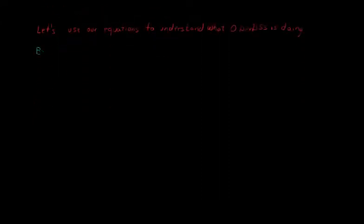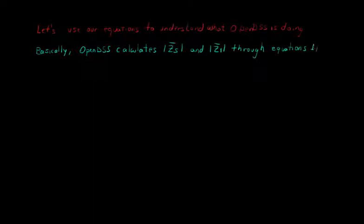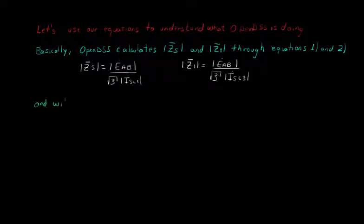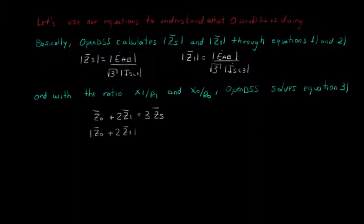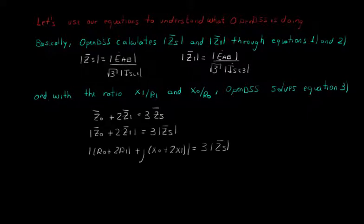Basically, what OpenDSS does is to calculate the module of ZS and the module of Z1 through equations 1 and 2, from which we can get that the module of ZS is equal to the module of EAB over square root of 3 times the module of ISC1, and the module of Z1 is equal to the module of EAB over square root of 3 times the module of ISC3. Finally, with the ratios X1 over R1 and X0 over R0, OpenDSS takes the module of both sides of equation 3 and solves for R0. With R0, X0 is also defined due to the ratio X0R0.